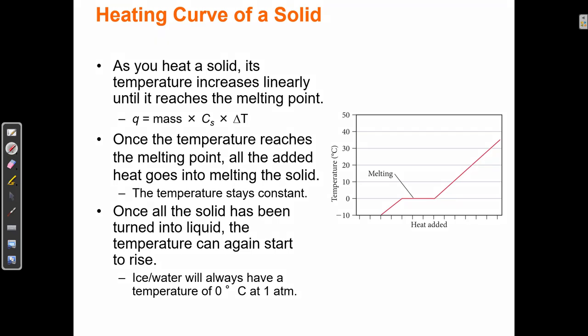All the energy I'm adding at this flat region is being used to break hydrogen bonds to turn a solid into a liquid. We can calculate what we call the enthalpy of fusion. The enthalpy of vaporization is how much energy it takes to boil a liquid and turn it into a gas, and the enthalpy of fusion is how much energy it requires to turn a solid into a liquid.